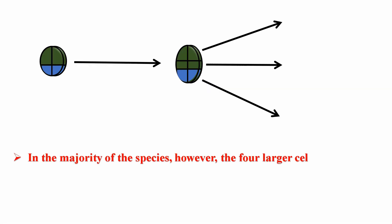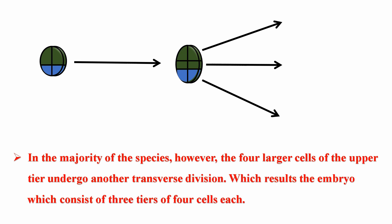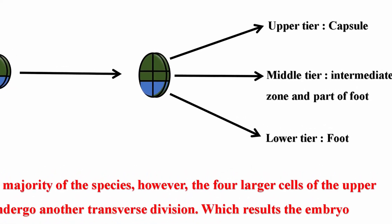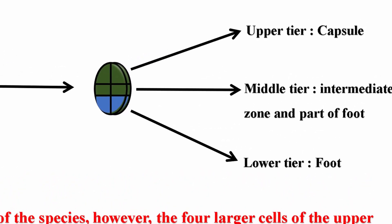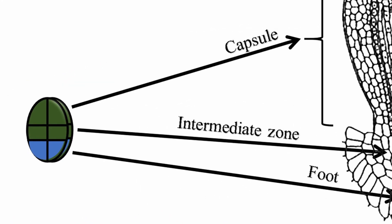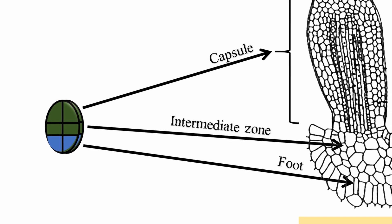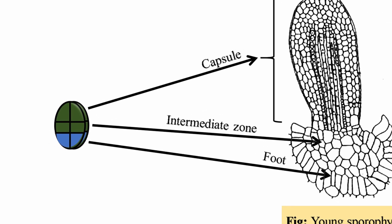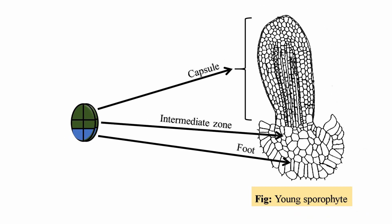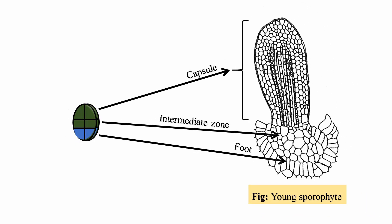In the majority of the species, the four larger cells of the upper tier undergo another transverse division which results the embryo which consists of three tiers of four cells each, in which the cells of the uppermost tier are still larger. The four cells of the lowest tier form the foot.